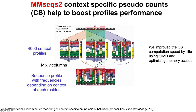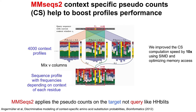We also improved MMSeqs2 profiles by applying context-specific pseudocounts, taking the HHBlits implementation and making it 10 times faster. More importantly, in comparison to HHBlits, MMSeqs2 applies the pseudocounts to every profile of the target database rather than just the query. The advantage is that having higher-quality targets increases sensitivity, and during the search you don't have to compute context-specific pseudocounts on the fly, which can still be quite expensive even at 10x speedup.